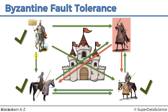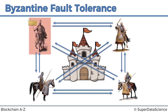The same thing works if the general ordered a retreat — they would all just retreat and reach consensus. That covers the case when one of the non-commanding generals is the traitor. Now let's look at the case when the main general himself is the traitor — will this algorithm still work?